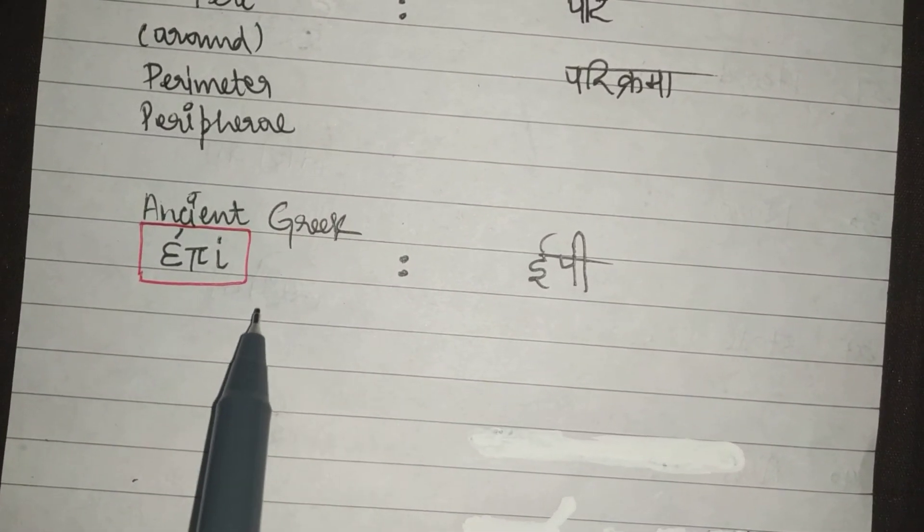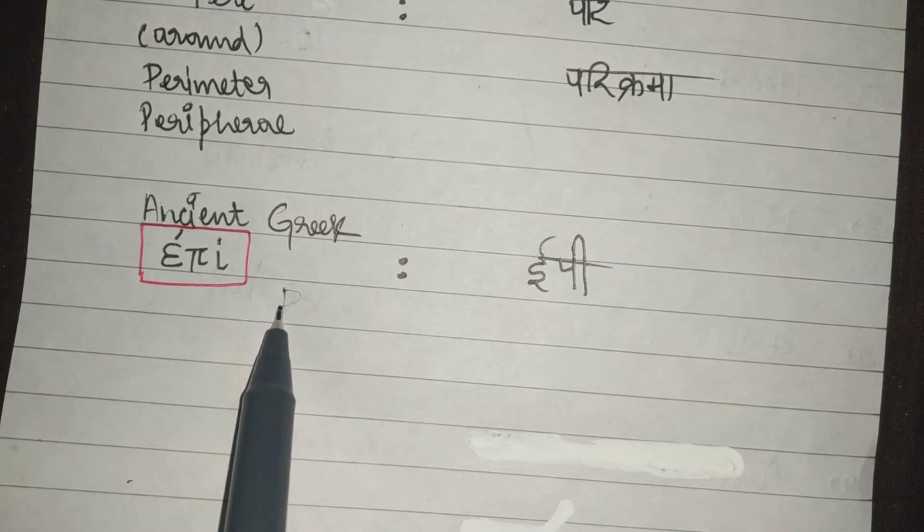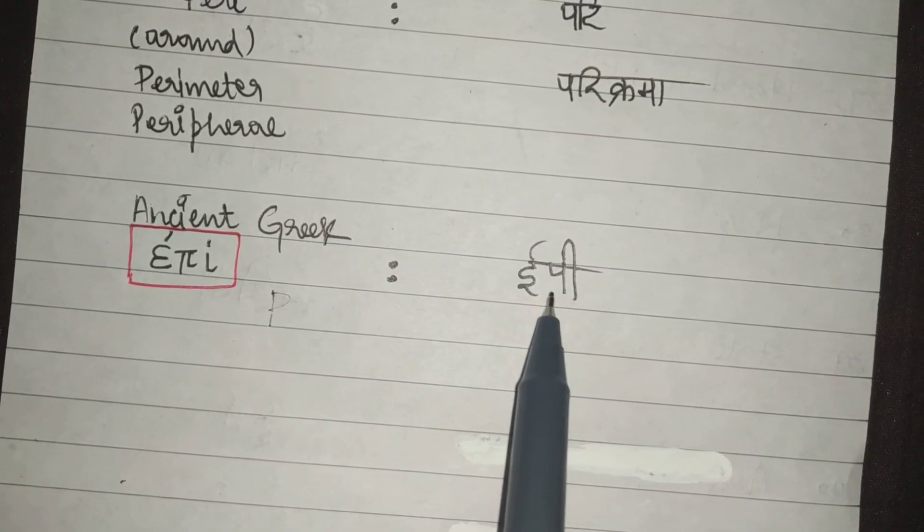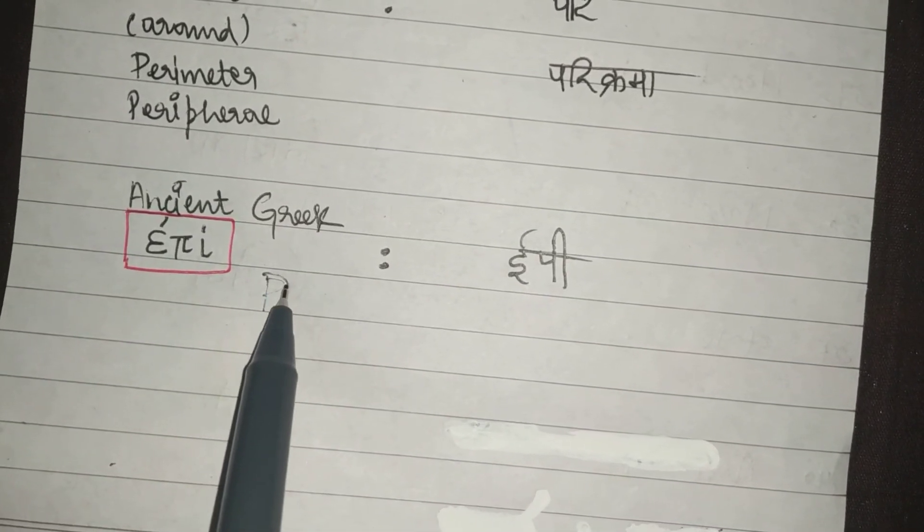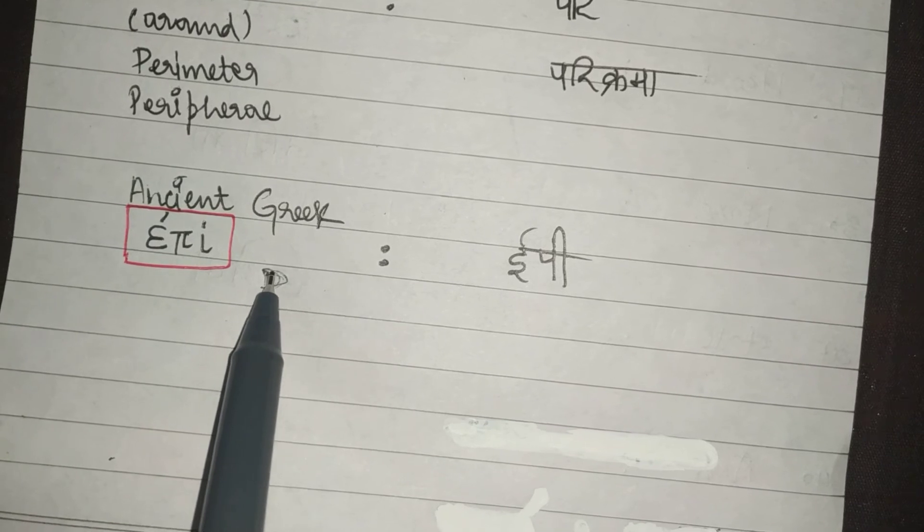In fact, the English word P is also quite similar to the Sanskrit word Per. And what we can see here.